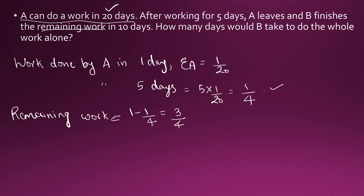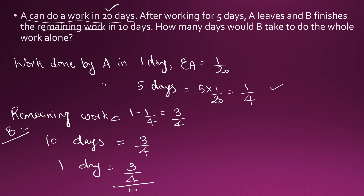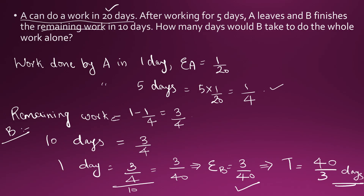B does 3 by 4 of the work in 10 days. So in 1 day B does 3 by 4 divided by 10, which is 3 by 40. This is the efficiency of B. To find how many days B would take to do the whole work alone, the time taken is the reciprocal of efficiency, which is 40 by 3 days, or 13 and 1 by 3 days. This is the final answer.